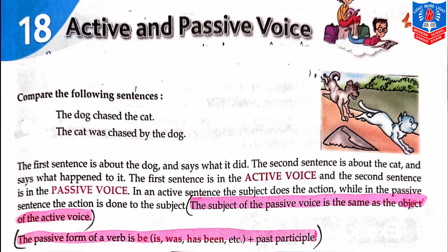The first sentence is about the dog and says what it did. The second sentence is about the cat and says what happened to it. The first sentence is in active voice and the second sentence is in passive voice.